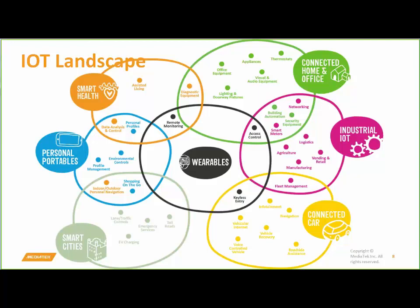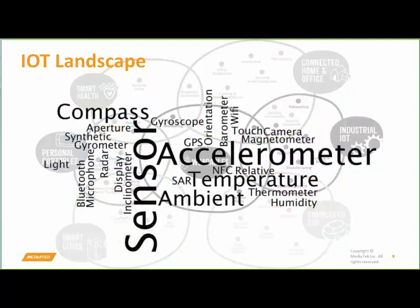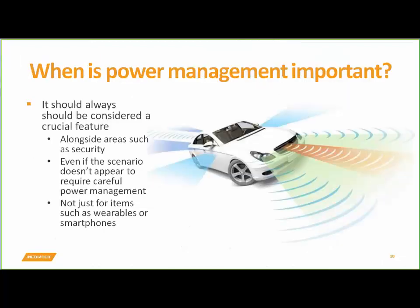Wearables, for instance, span a number of vertical segments. As you've got all these different verticals and solutions within verticals, you're going to have a number of devices that are sensing things — each solution has multiple sensors. So we're multiplying verticals by solutions, by devices, by sensors, and that number becomes extremely large. Even if you've got an unlimited power supply, you can't just keep adding more and more devices to drain the power. At some point there's going to be a breaking point. So with this in mind, power management is absolutely crucial.